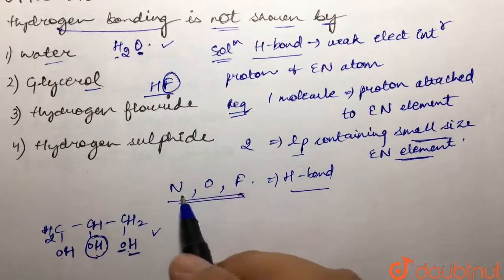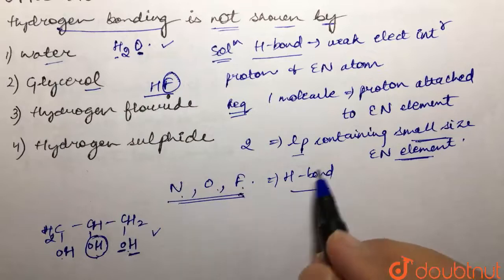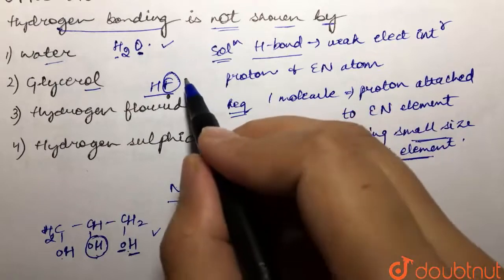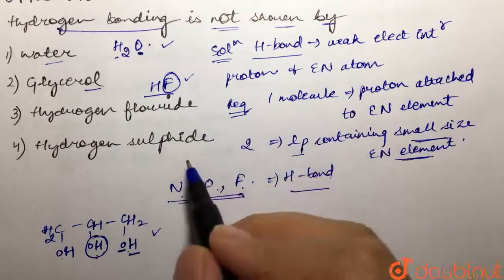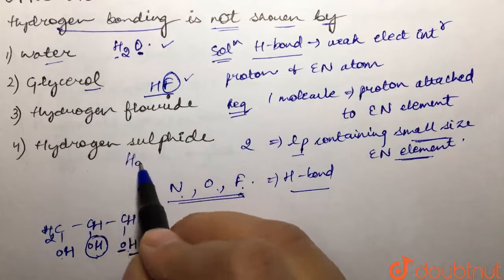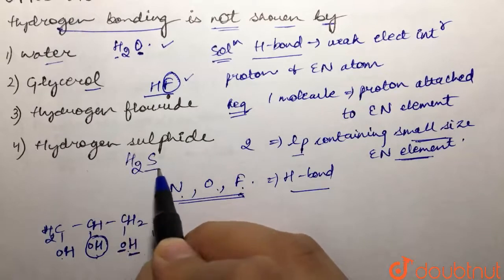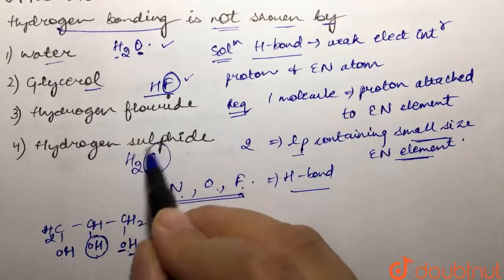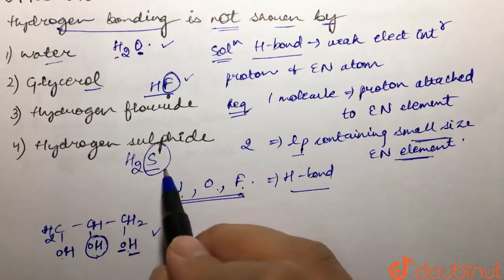The third option is hydrogen fluoride, HF. It contains the electronegative element fluorine. Since nitrogen, oxygen, and fluorine are the elements that show hydrogen bonding, HF also shows hydrogen bonding.